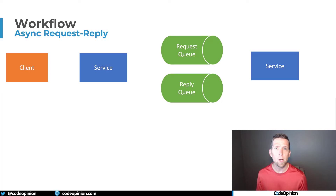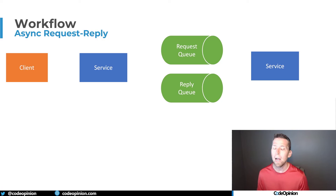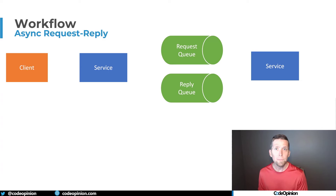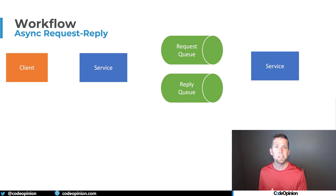What I'm describing here is a long-running business process and workflow that involves many different services. In that particular situation, I wouldn't want to use gRPC. Rather, I'd rather use messaging and decouple — temporarily decouple — so that not all services necessarily need to be online to make the workflow work.